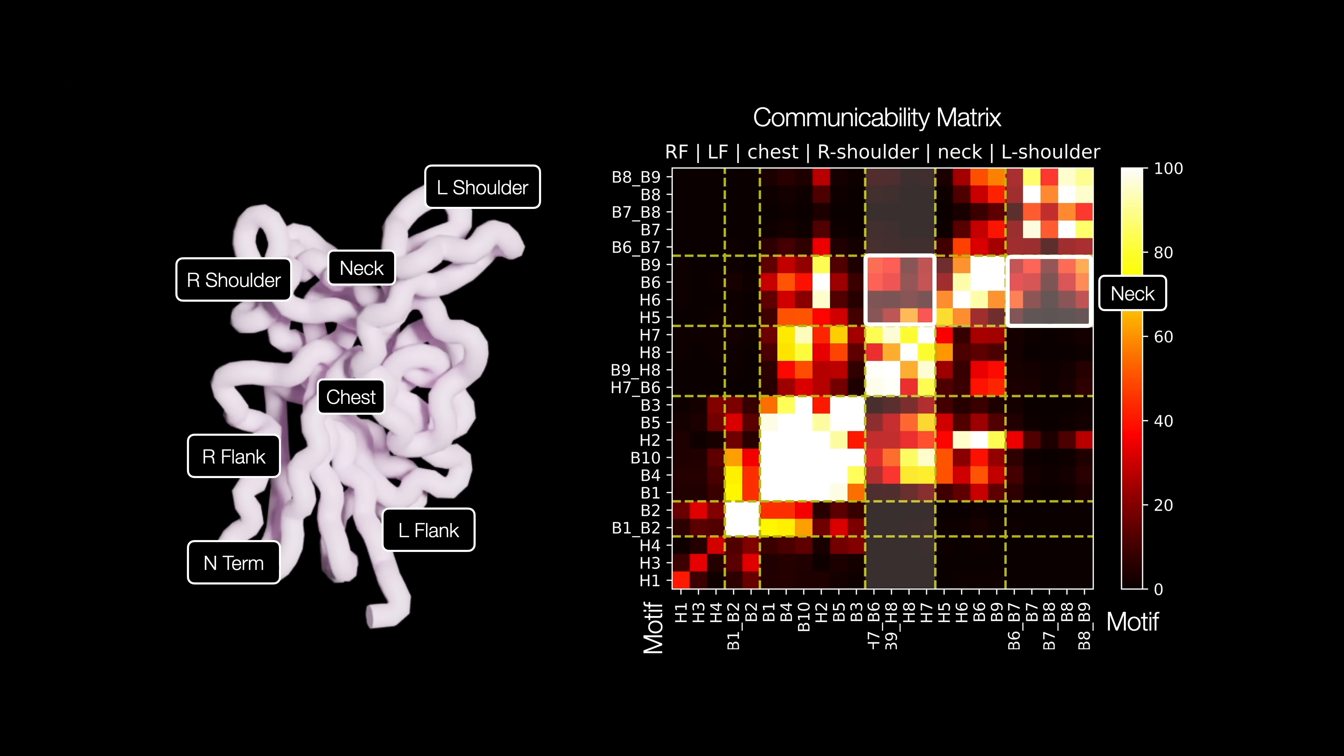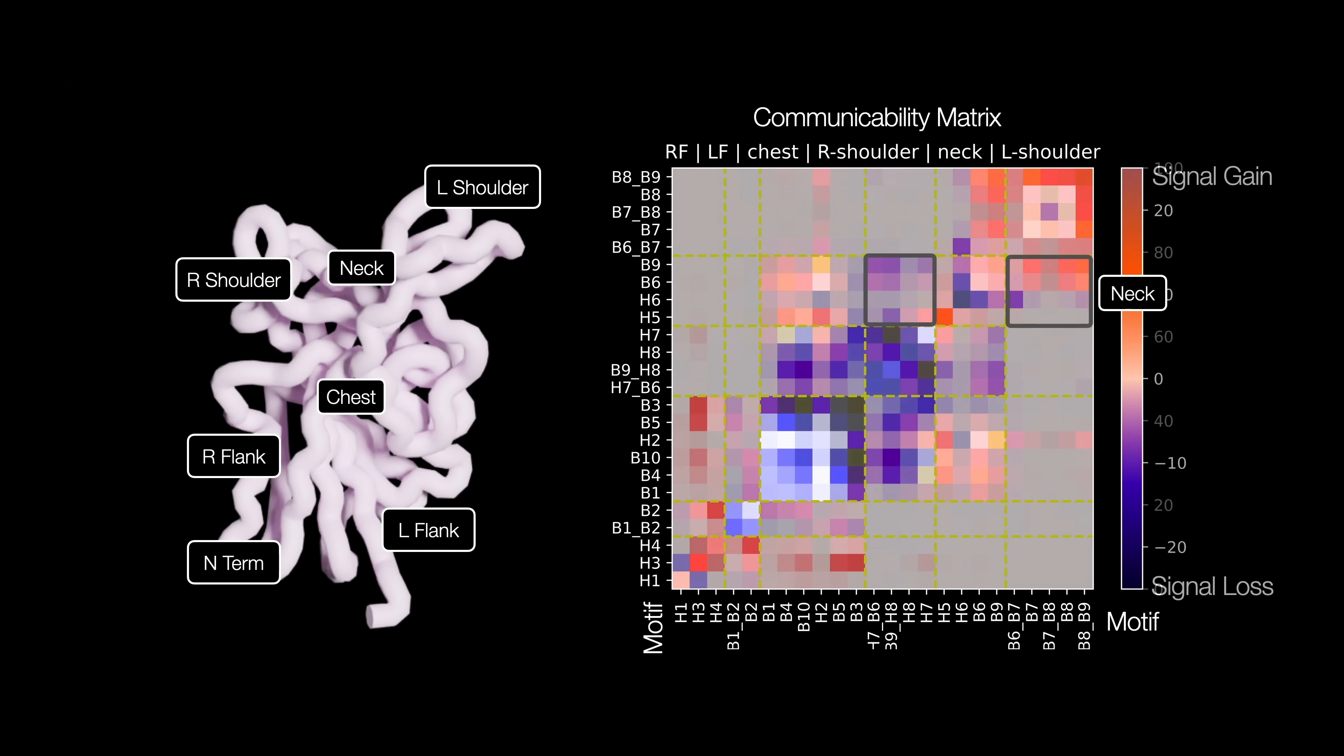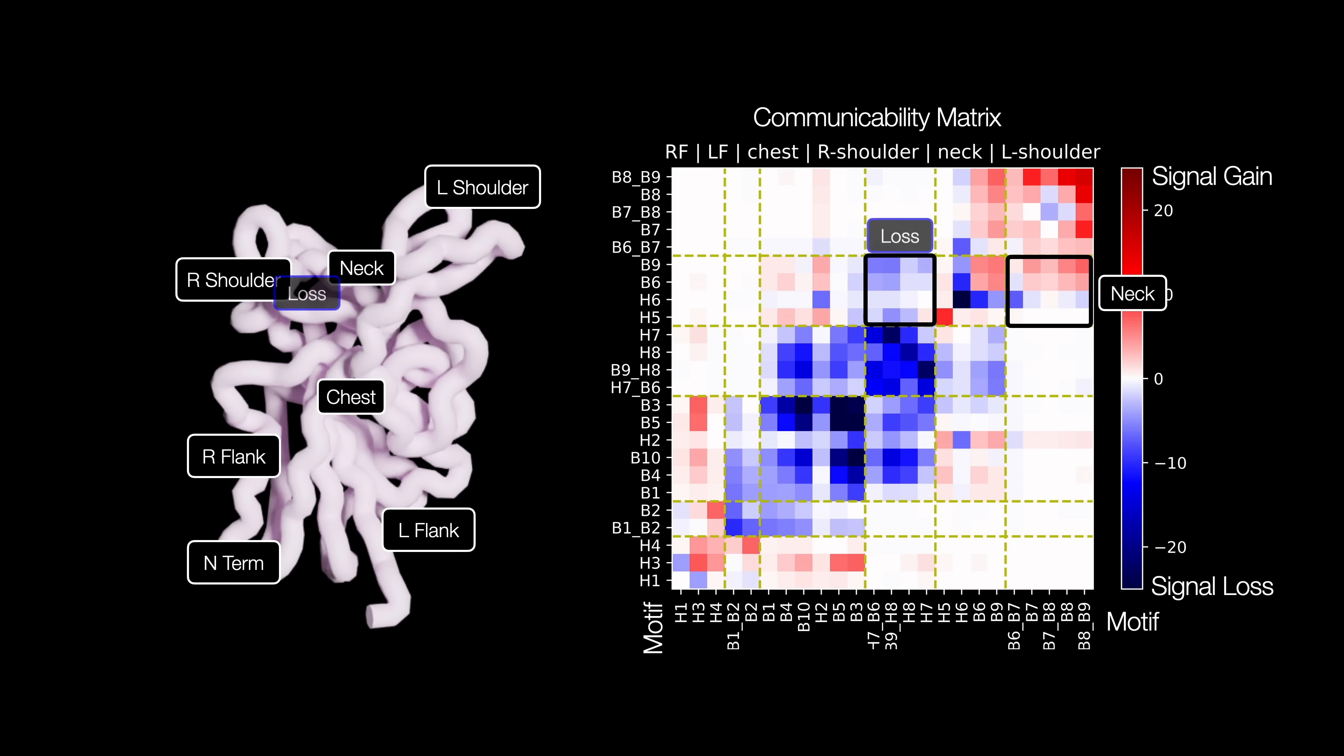This is further supported by subtracting the communicability matrix of the drug bound version from the control. The drug disrupted the interactions between the right shoulder and the neck, which strengthens the interactions between the neck and the left shoulder. This is why the left shoulder became less flexible. We found the answer!